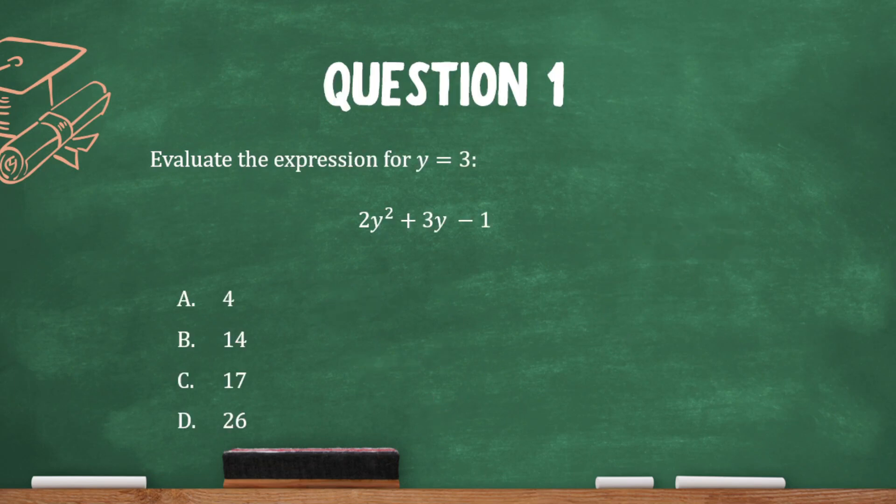All right, evaluate the expression for y equals 3. So let's substitute 3 everywhere there is a y. And we're going to write, besides substituting that 3, we're going to write everything else the same. So 2 times 3 squared plus 3 times 3 minus 1.